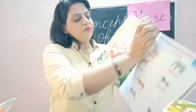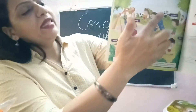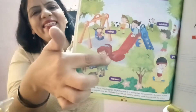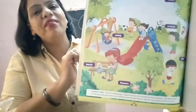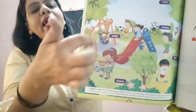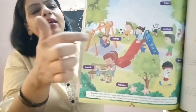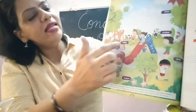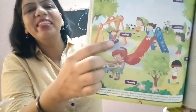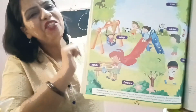This is a slide. And these are children. Slide is one, and children are more than one. Now this is a swing, and these are children.